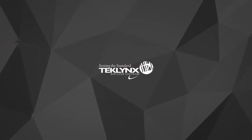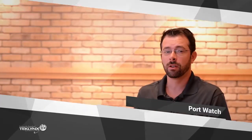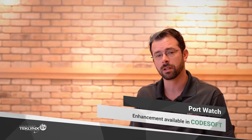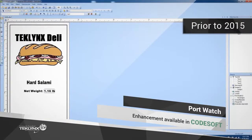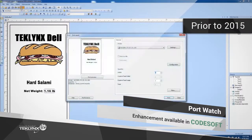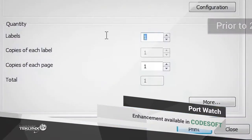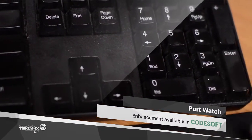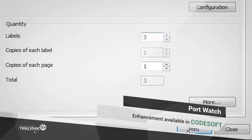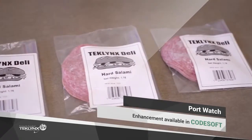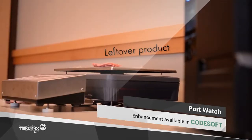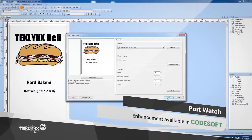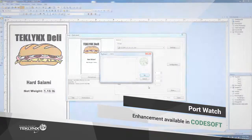When speaking with customers that use weighing scales, primarily those in the food and manufacturing industry, we knew there was an opportunity to improve their experience in Codesoft. We recognized that the process required users to first enter in a quantity of items to be weighed and labeled, when many times users were unaware of this specific quantity. This resulted in users having to complete the process multiple times, causing user frustration, wasted time, and label stock.